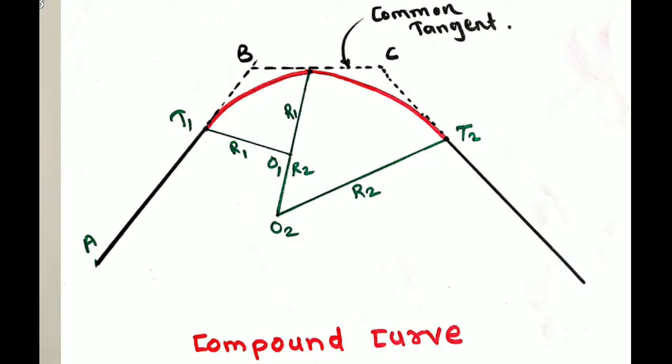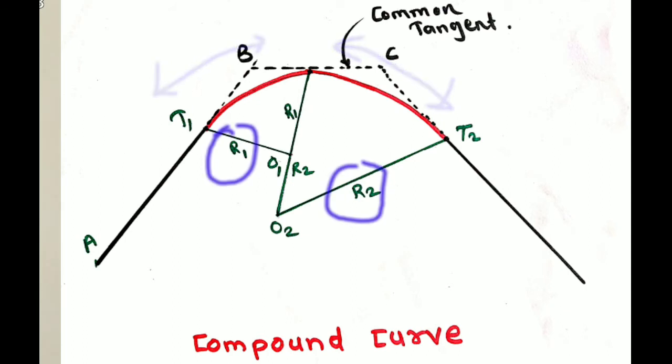A simple circular curve is provided when there is a change in alignment, especially in hilly regions. The next important type of horizontal curve is the compound curve. A compound curve is when two or more arcs are connected to each other having different radii — one arc with radius R1 and another with radius R2 — both curving in the same direction. Compound curves are provided when there is excessive excavation in rocky regions, in order to avoid cutting and filling.